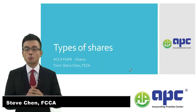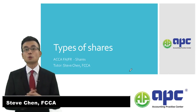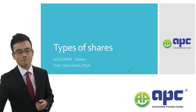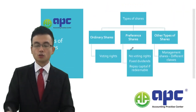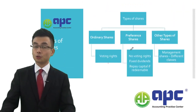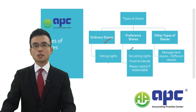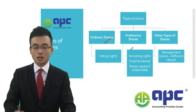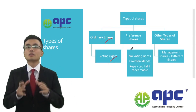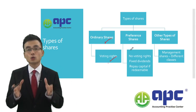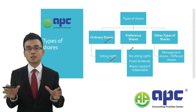In this video, I'll be explaining different types of shares you may see in your exam. The company may issue ordinary shares, allowing the buyer — becoming the shareholders — to have voting rights, which means to attend the annual general meeting with a group of shareholders.